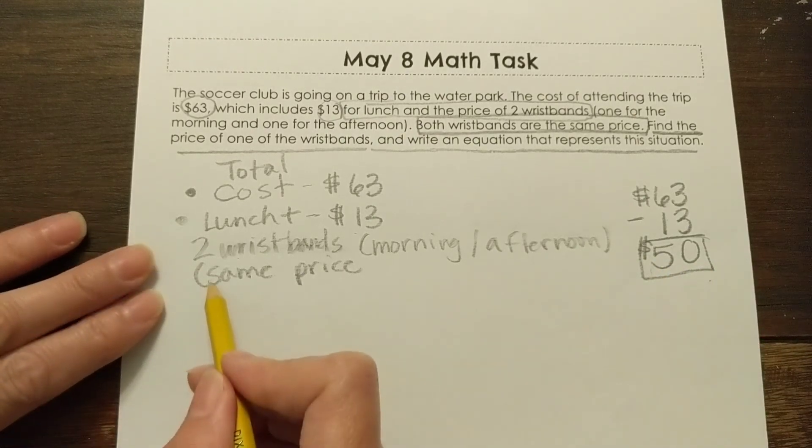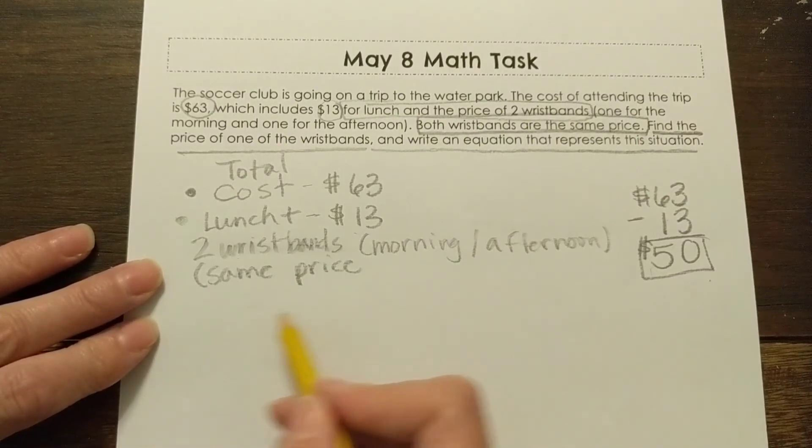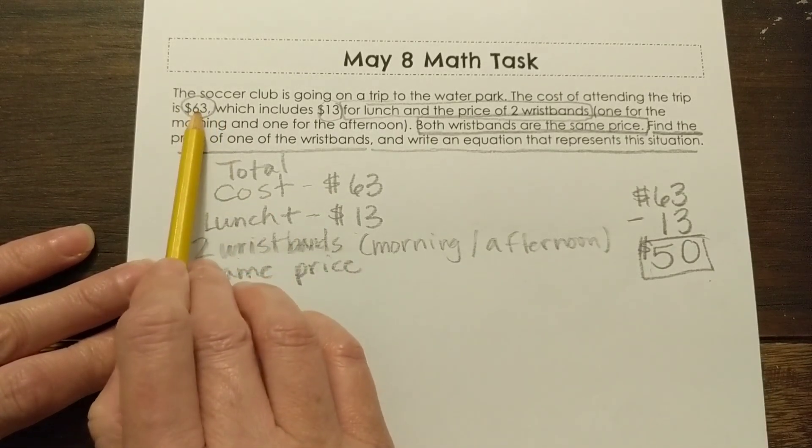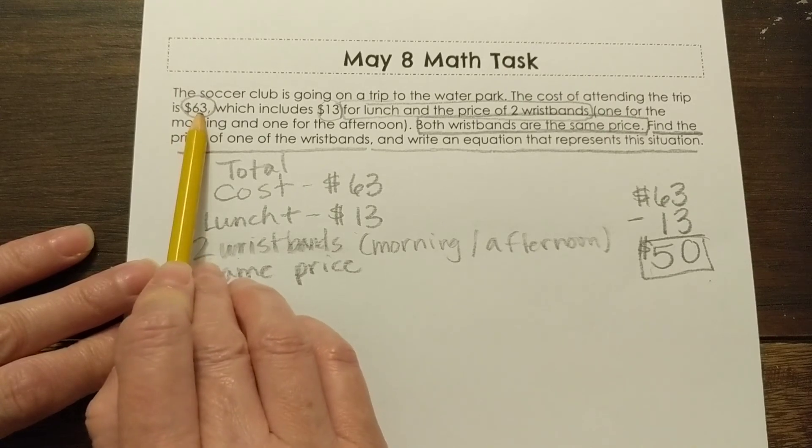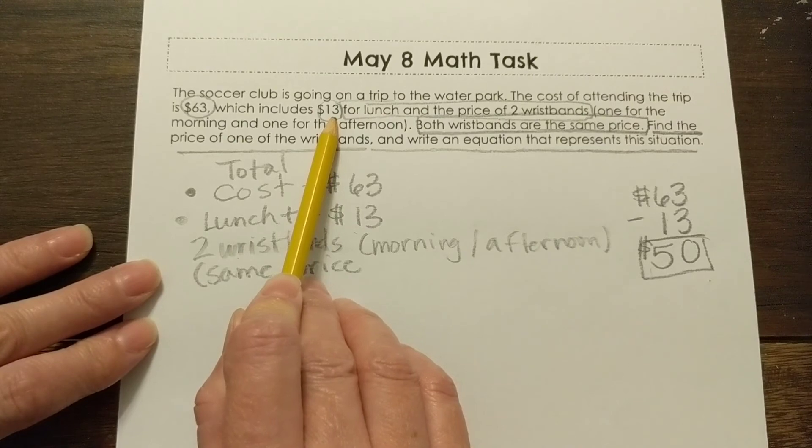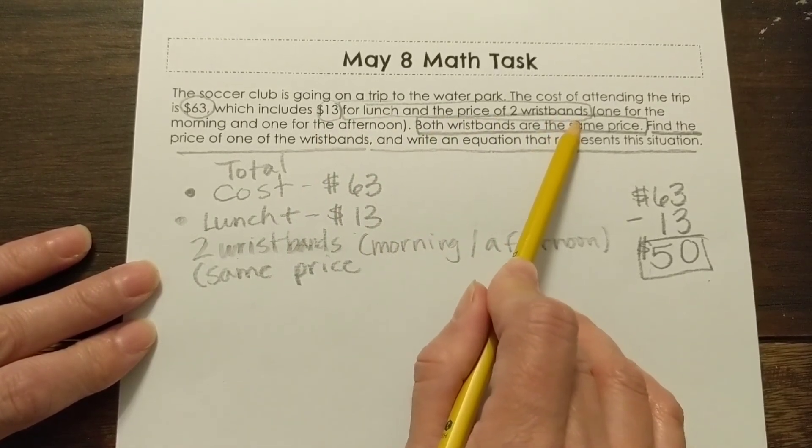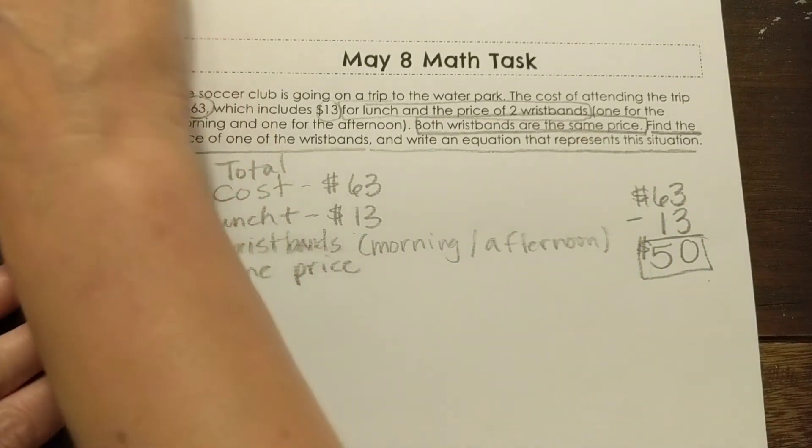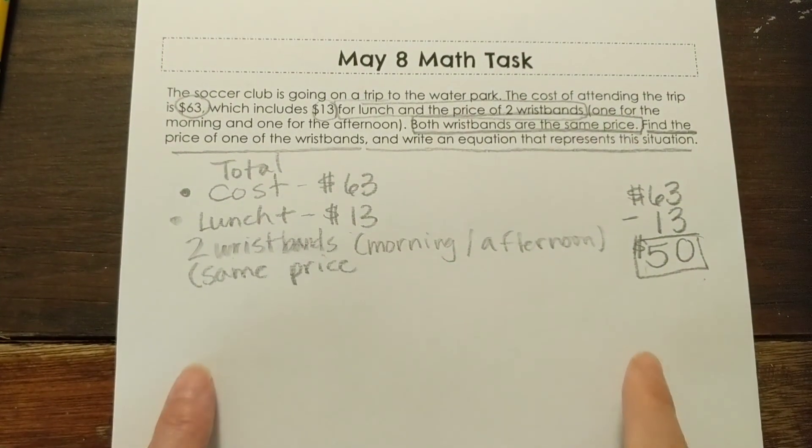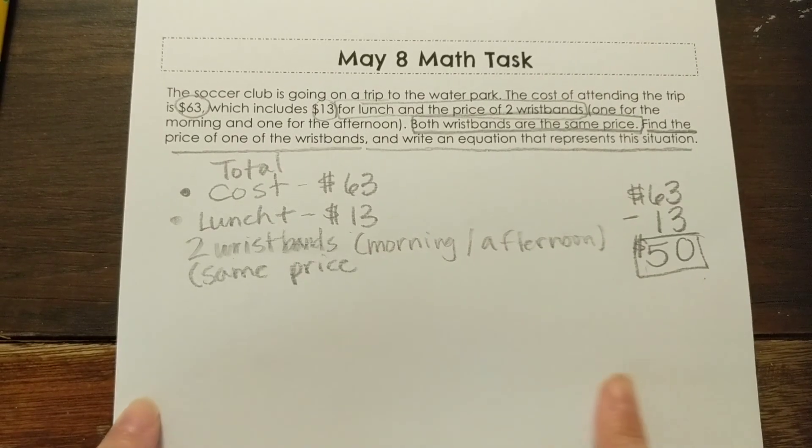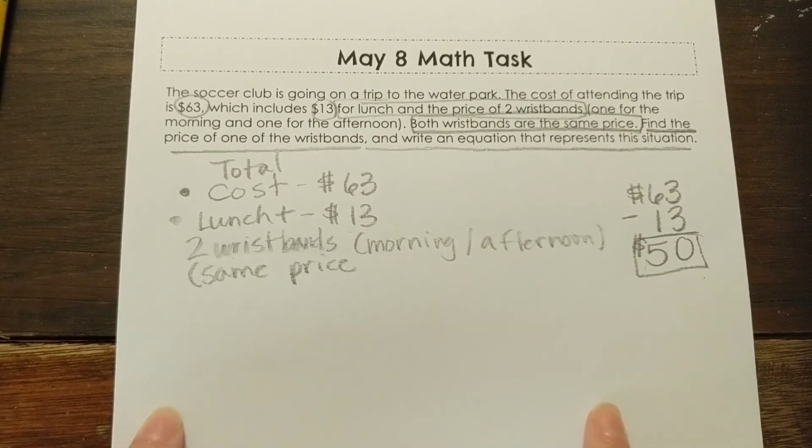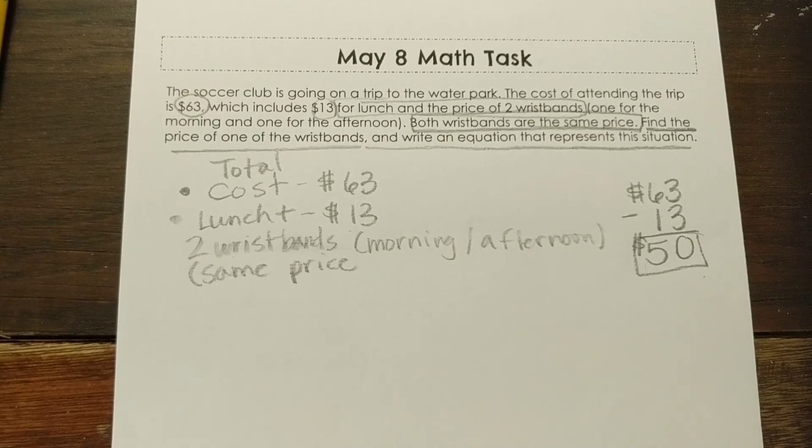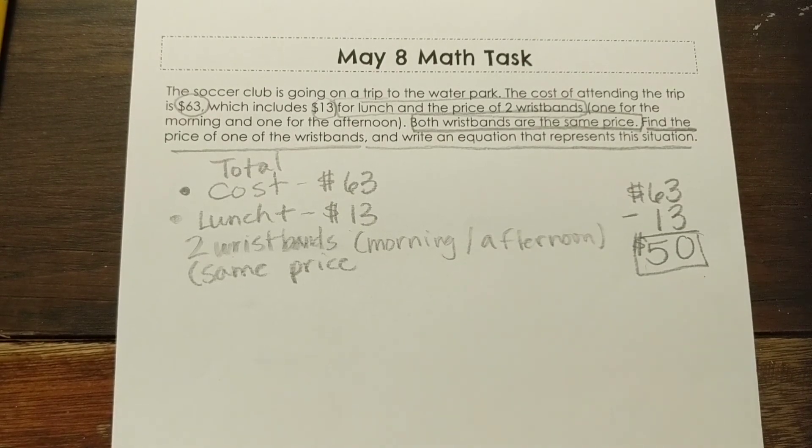So I want you to figure out how much each of those wristbands cost. And make sure that you show your work here. You can draw a picture. So so far we know that $63 was spent just to attend the soccer club. $13 was for lunch. And it also includes the price of two wristbands. So we're figuring out how much those wristbands are now. So I'd like you boys and girls to go ahead and finish this problem for today. And if you could write your answers, how much the wristbands are, and show me the equation that you chose to solve this problem. You need to write out an equation. All right, boys and girls, finish this up. And I hope you have a wonderful day. And I will see you soon with my Mother's Day art post. All right. Bye-bye.